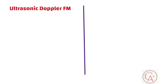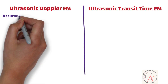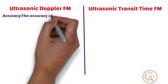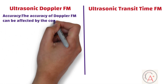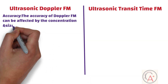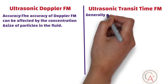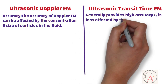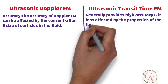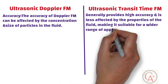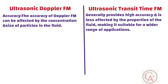In terms of accuracy, the accuracy of Doppler flow measurement can be affected by the concentration and size of particles in the fluid, and it may not be as accurate as transit time measurement in clean liquids. On the flip side, ultrasonic transit time measurement provides high accuracy and is less affected by the properties of the fluid, making it suitable for a wider range of applications.